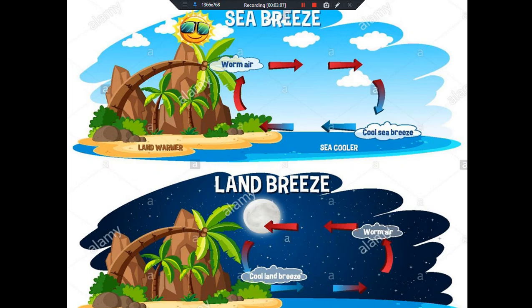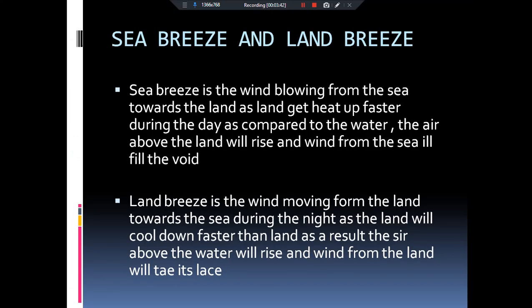Jiski wajah se upar ki hawa bhi garam ho jaayegi aur iske wajah se wahaan par low pressure area create ho jaayega. Lekin kyunki specific heat of water bahut hi zyada hai, jiski wajah se jo water hai wo bahut hi dheere-dheere garam hota hai. Toh land par ban chuka hai low pressure area kyunki wahaan temperature zyada hai, lekin water bodies par temperature comparatively kam hai — wahaan high pressure area hai. Wind moves from sea to land — sea breeze.